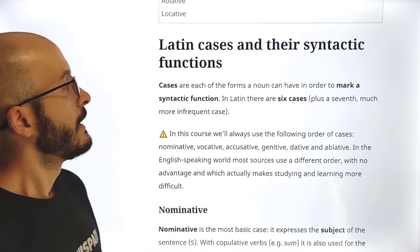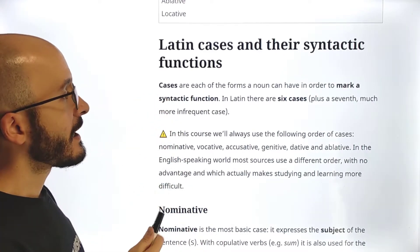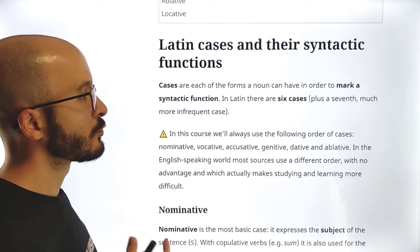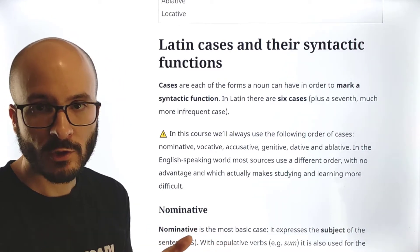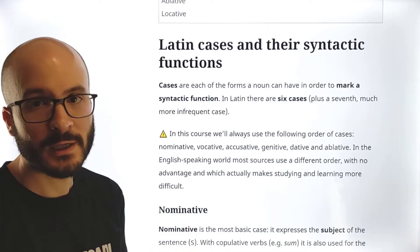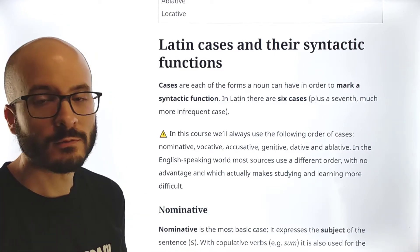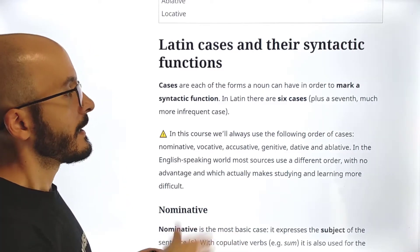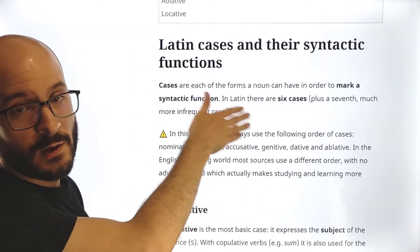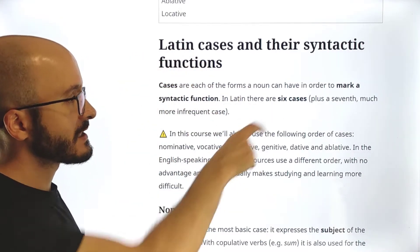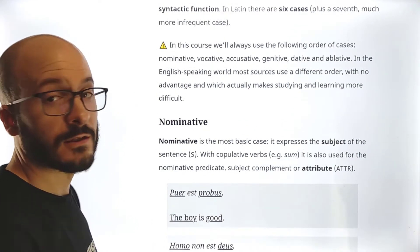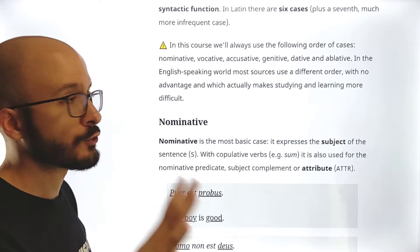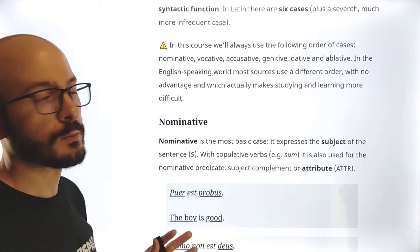So what are cases? Cases are each of the forms a noun can have in order to mark a syntactic function. Remember, subject, direct object, adverbial, complement of the noun, all of that. In Latin, there are six cases, the ones that we already learned, plus a seventh, much more infrequent case, which we will introduce. We will only introduce it here because it's not super important.